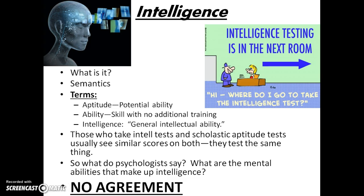Psychologists actually give the term intelligence a definition of general intellectual ability, which is pretty much similar to 'we know it when we see it.' Intelligence tests measure general mental ability, similar to scholastic aptitude tests, and most people have similar scores on both types of tests. Intelligence tests seem to be good indicators of school performance because they tend to test the same thing.